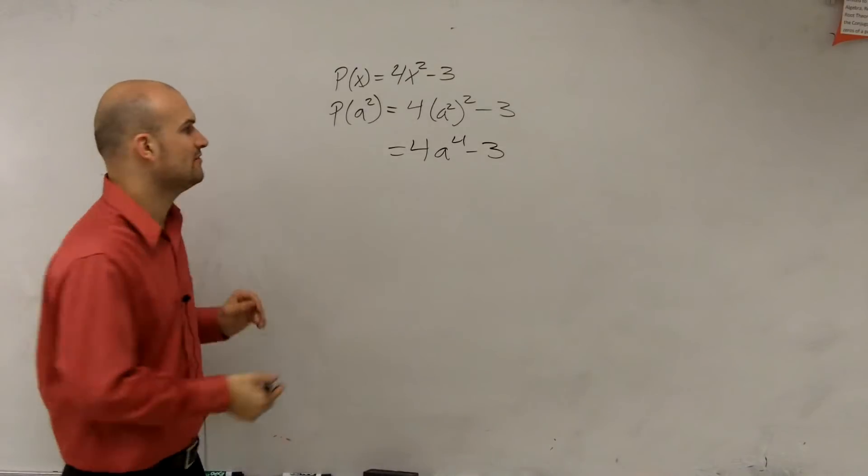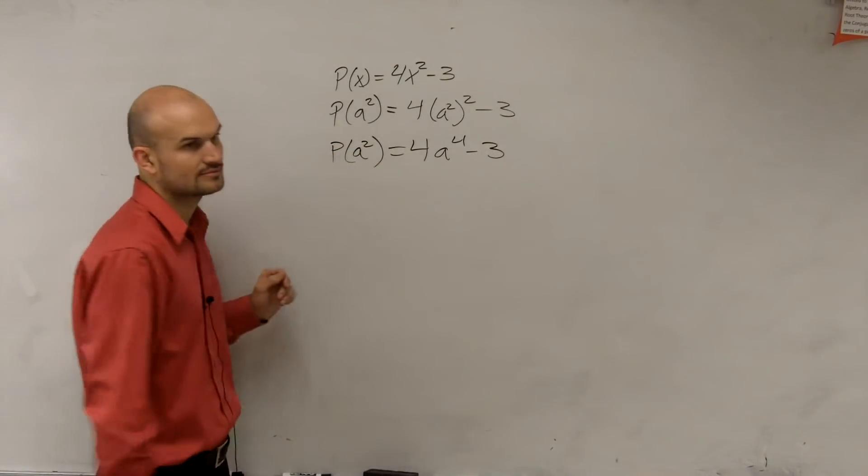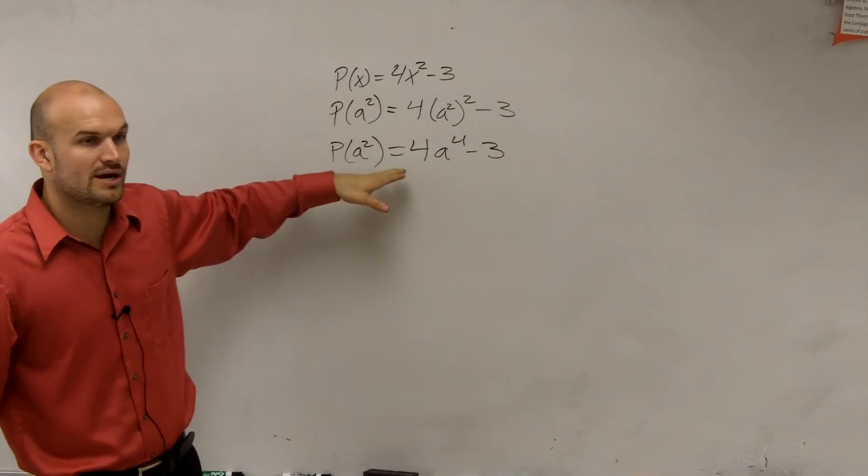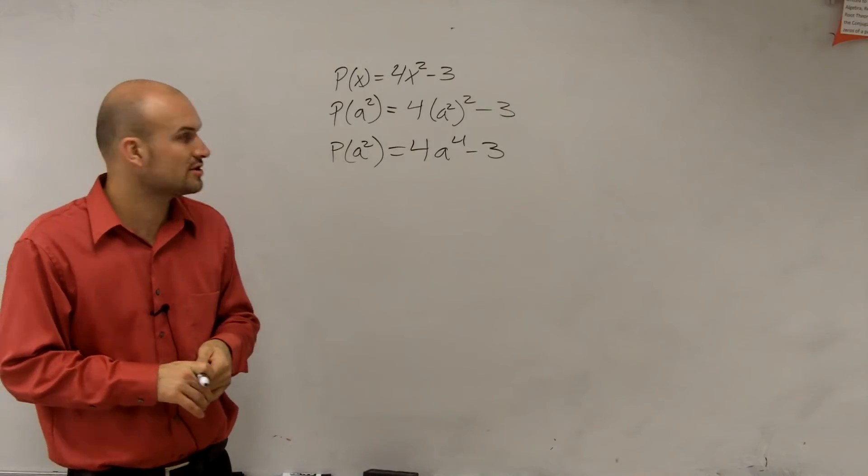I can't simplify that any further. p of a squared. So my function p evaluated at a squared is going to equal 4a to the fourth minus 3.